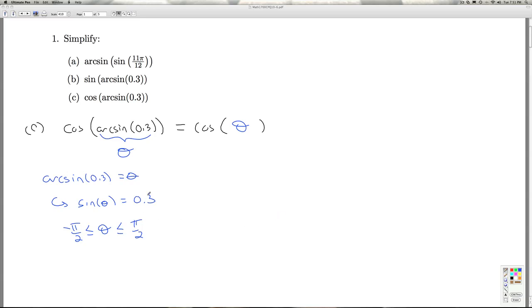All right, I know the sine of theta. I can get to the cosine of theta using the Pythagorean identity. So, I plug that in. I square that out.